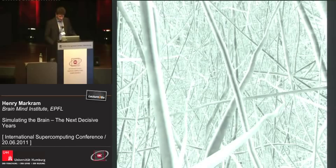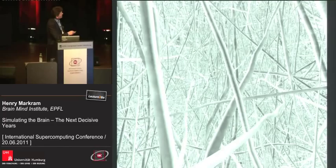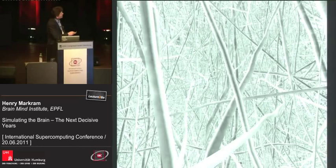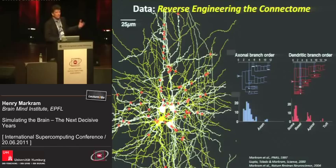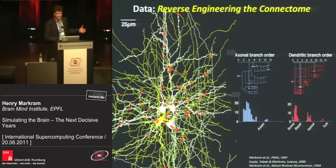Now you face the next challenge: you have to start connecting them. Your brain has about a thousand trillion synapses. In this part alone, you have about 10 million synapses and you have to find out where they are. So we look at where these cells touch. Going back to the data — and this was a huge number of experiments — you discover you can find where these cells touch each other and form what are called synapses.